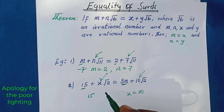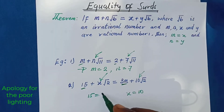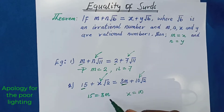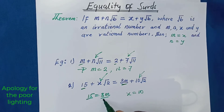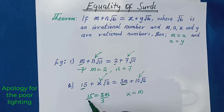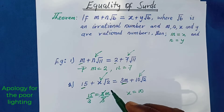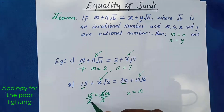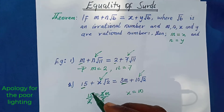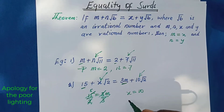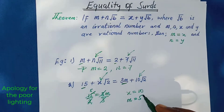And then the numbers without the surds are also equal, so we have 15 is equal to 3m. But we are looking for m, so we divide both sides by 3. This cancels, and 15 divided by 3 gives 5. Therefore m is equal to 5.